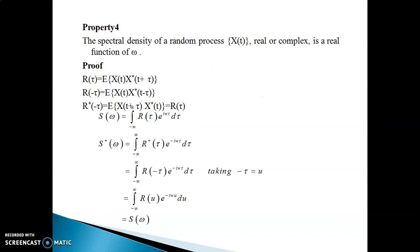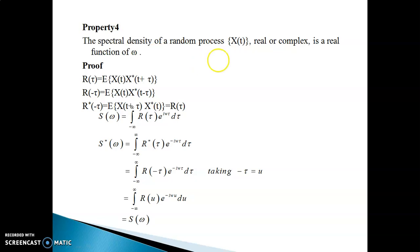Property 4: the spectral density of a random process x(t) — whether real or complex — is a real function of ω. To show that a function is real, we use the fact that a complex number z is real if z = z̄ (z equals its conjugate). Similarly, a function is real if it equals its own conjugate.